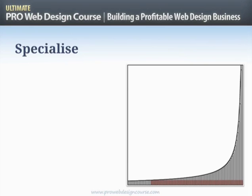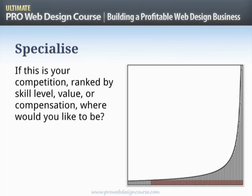Point number one: you need to specialize. Imagine this 80/20 curve represents all the web designers in the market that your ideal prospect might look at, talk to, or see on Google. They are ranked by skill level — there are a lot of relatively low-skilled and a few very high-skilled designers. The height of the graph represents the value of projects they do or the compensation they get. Where do you want to be — among the most skilled and best paid, or down in the long tail with the rest?